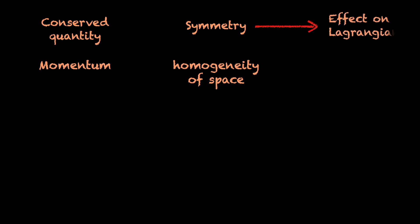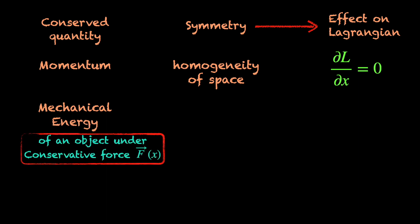So we have seen that conservation of momentum follows from a symmetry, the homogeneity of space. A symmetry that has implications on the Lagrangian of a system. But we have come across another conserved quantity in this video itself, the mechanical energy of an object under a conservative force. Does this mean energy conservation also follows from some kind of symmetry? Let's think it through.